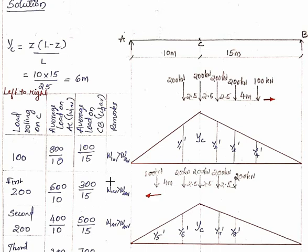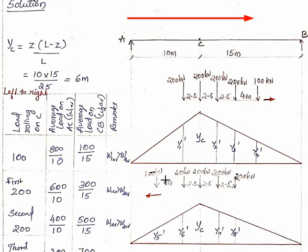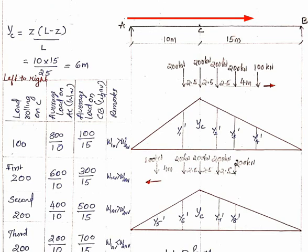Comparing the loads in each part: average load on AC is 200 divided by 10 = 20, and 700 divided by 50 = 14 for CB. So W1av (20) is greater than W2av (14). Now checking the next load: average load on AC is 200 by 10, and we check W1av less than W2av condition.